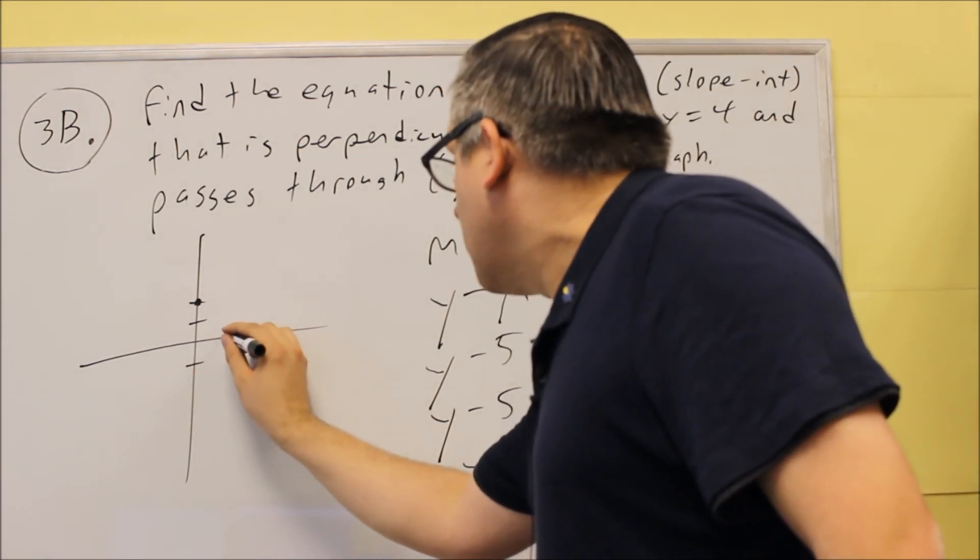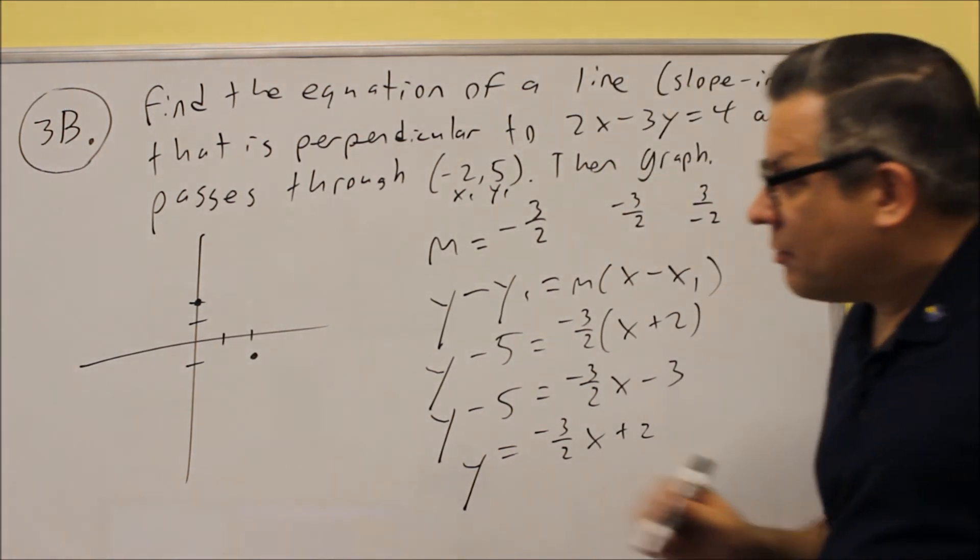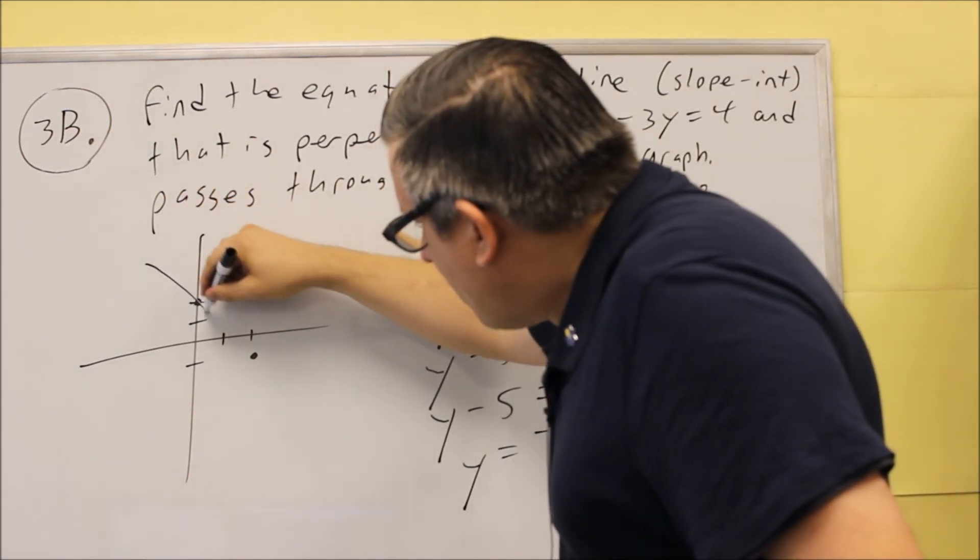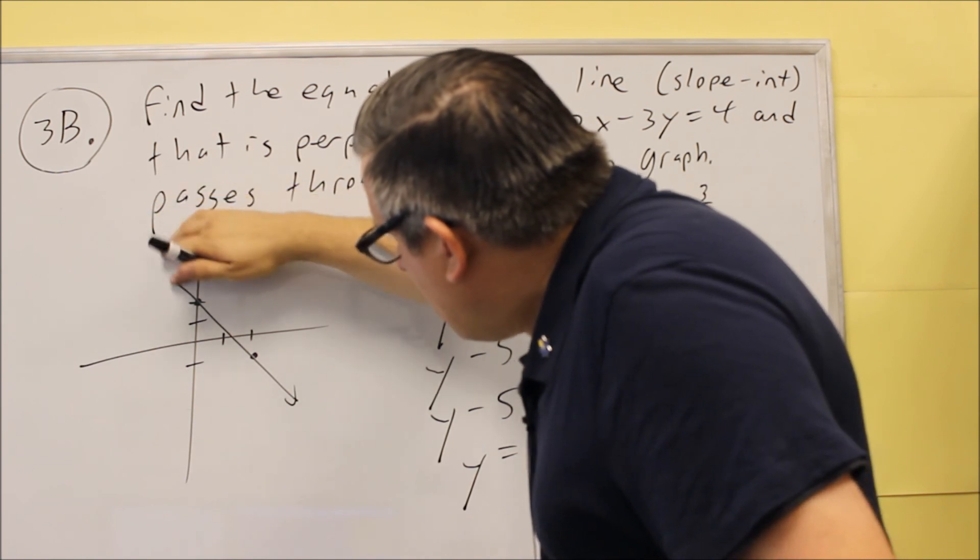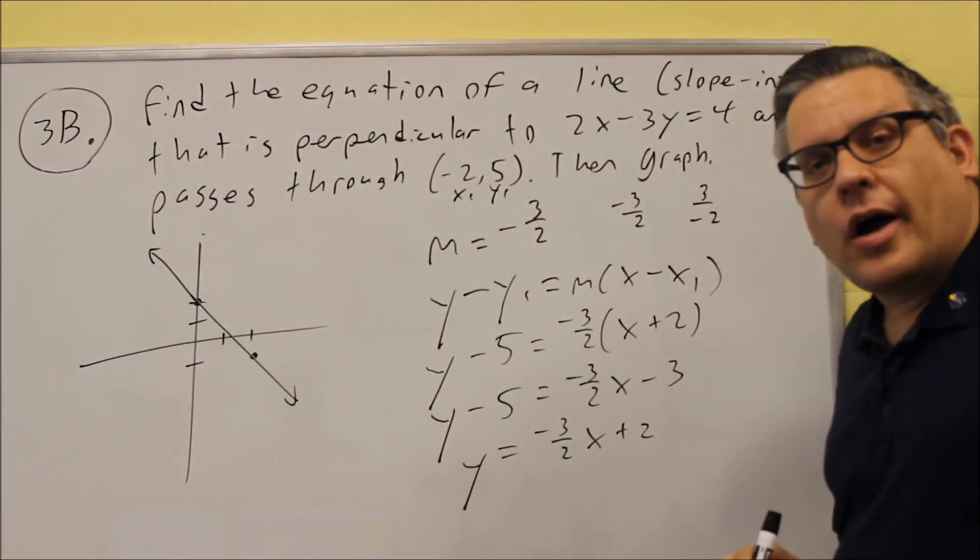So I'm going to go down 3, and then I'll go to the right, and then make a dot right there. And then I just draw my line through. My line is going to try and draw it straight here. Okay, so that would be your answer.